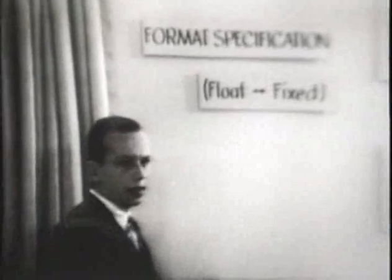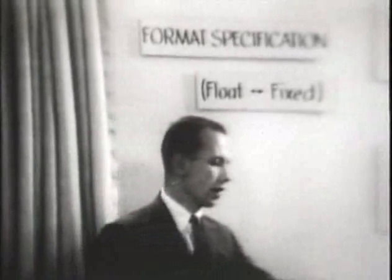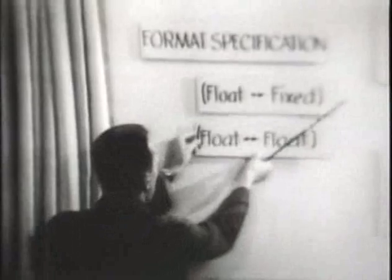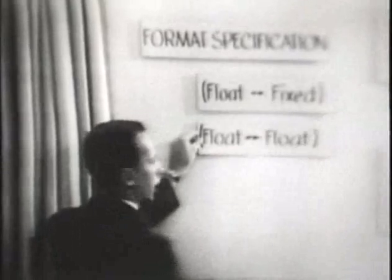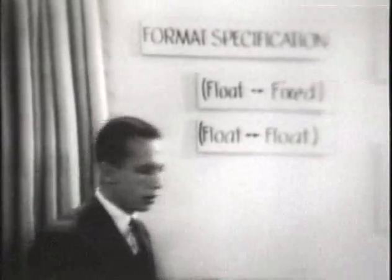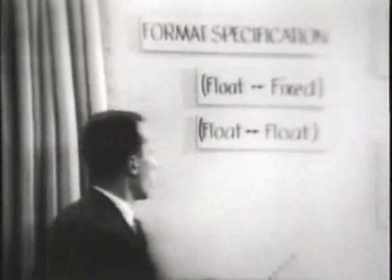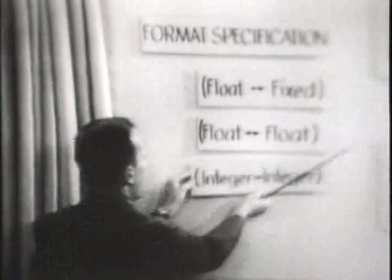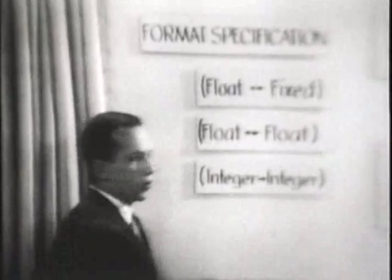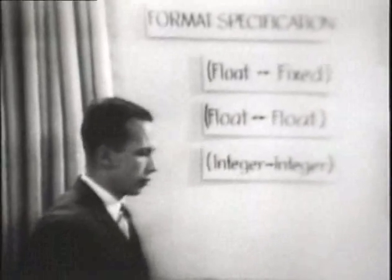The first type is fixed point, both internally and externally. The second is floating point, both internally and externally. And the third is integer, both internally and externally.